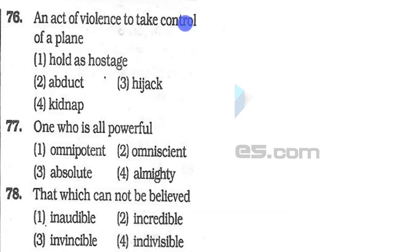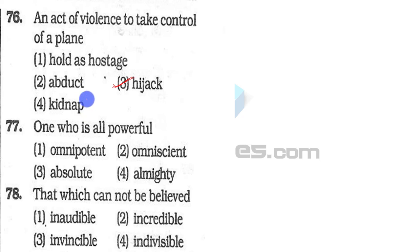You have to tell one word for the given sentence. 'An act of violence to take control of a plane' — this is 'hijack.' Hold as hostage means when you kidnap somebody. Kidnapping means when you forcefully take somebody to an undesired location without their consent. Abduct is also almost the same meaning. But an act of violence to take control of a complete plane is known as hijack.